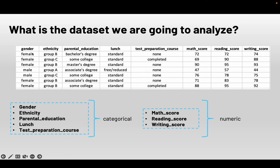We have columns that represent the variables. The variables include gender, ethnicity, parental education, lunch, test preparation course, math score, reading score, and writing score. Each row represents a student's characteristics and their performance.